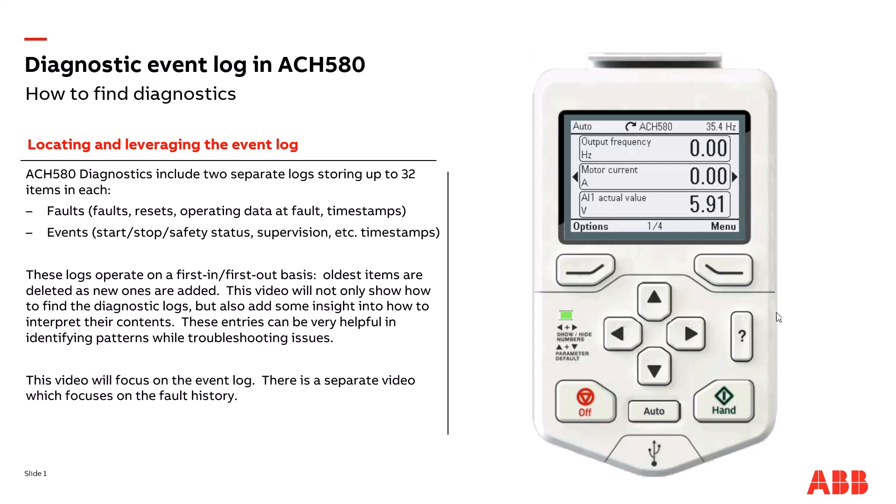The difference between these logs is that one records faults and the other records events. Faults are conditions that cause the drive to stop modulating, such as over-current, DC bus over- or under-voltage, over-temperature, short circuits, and things like that. Events are transitions in operating state such as start, stop, safety interlock opening, hand-off-auto transitions, etc.